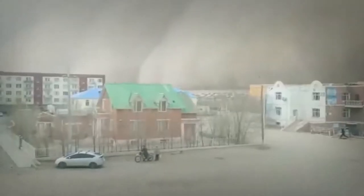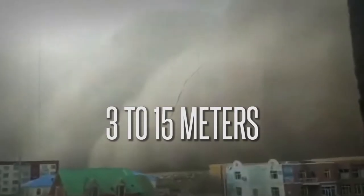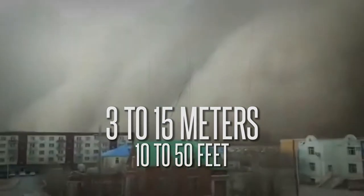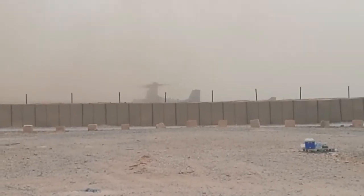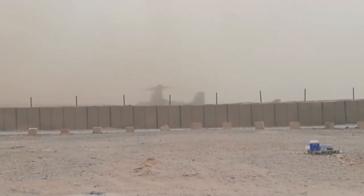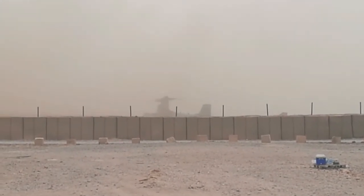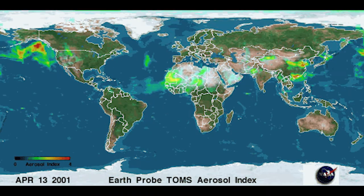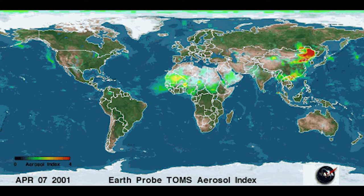The sand involved in a sandstorm can reach heights of approximately 3 to 15 meters, or 10 to 50 feet. Usually the height of a sandstorm corresponds to the wind strength. Dust particles associated with sandstorms have been found at 1500 meters, or 5000 feet, though these are more rare.